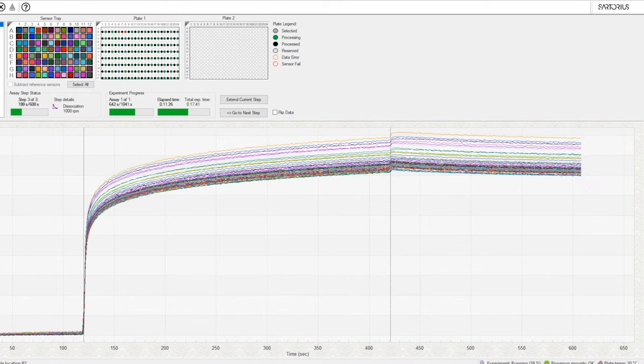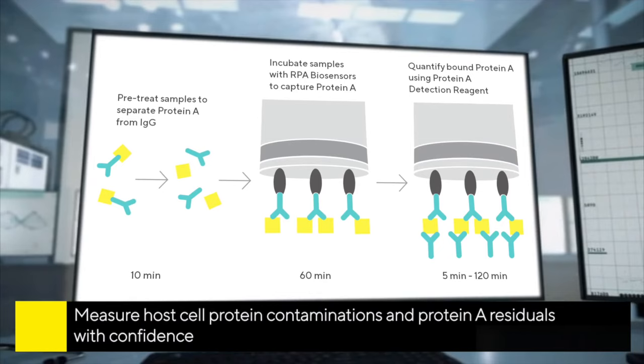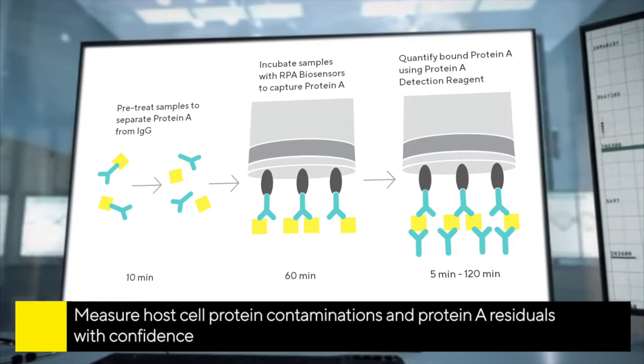The system provides 384 binding kinetics results in as little as 15 minutes. You can also perform customized multi-step quantification assays for applications such as host-cell protein contamination and residual protein A detection, allowing detection of sub-nanogram per milliliter concentrations.